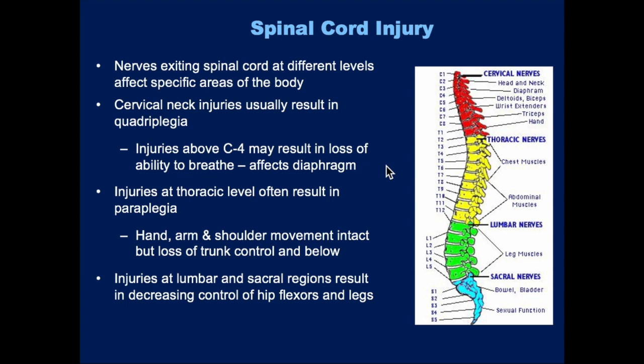For cervical neck injuries, you can get essentially complete quadriplegia. One of the big problems, aside from the quadriplegia, is that it can affect the patient's ability to breathe because the diaphragm is innervated and controlled by nerves that connect through the cervical spine. This is one of the reasons it's so important to constantly reassess your patient with a spinal cord injury — because if their injury worsens, they could completely lose control of their diaphragm and you might have an airway emergency.